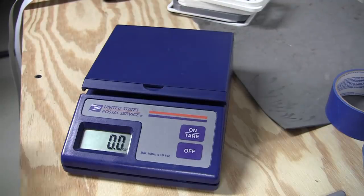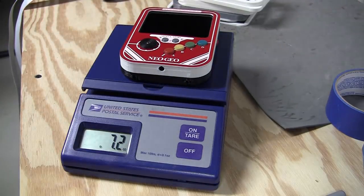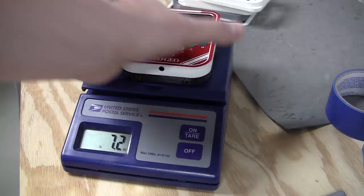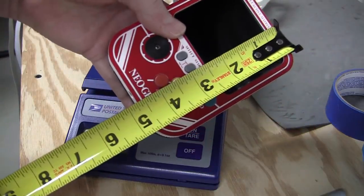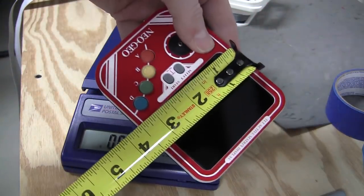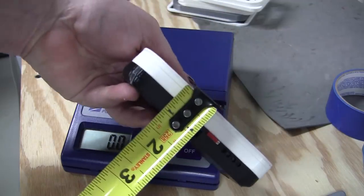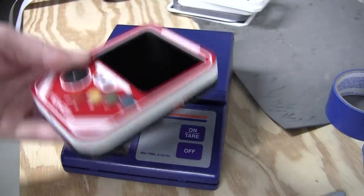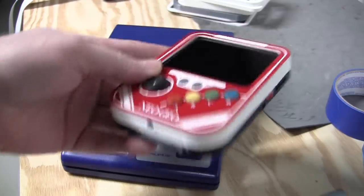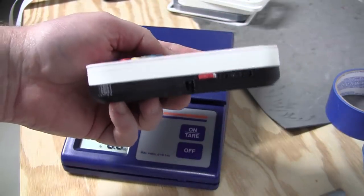Hey, let's check the stats. All right, 7.2 ounces. Height, 4 and 3 quarters. Width, 3 and a half. Thickness, 1 inch. I would have liked it to be a little thinner, but the battery took up a good amount of space.